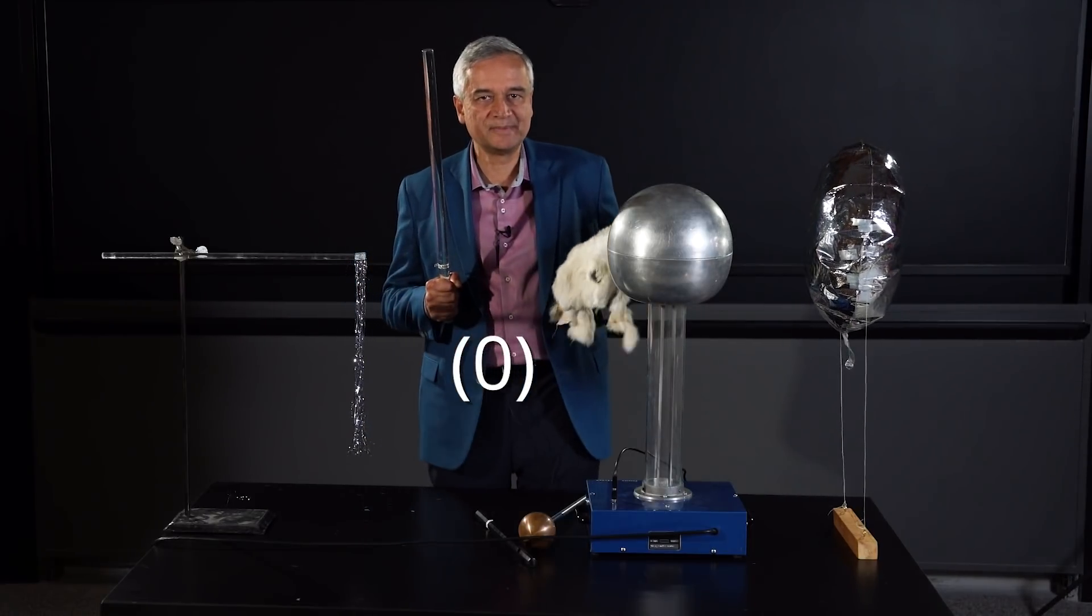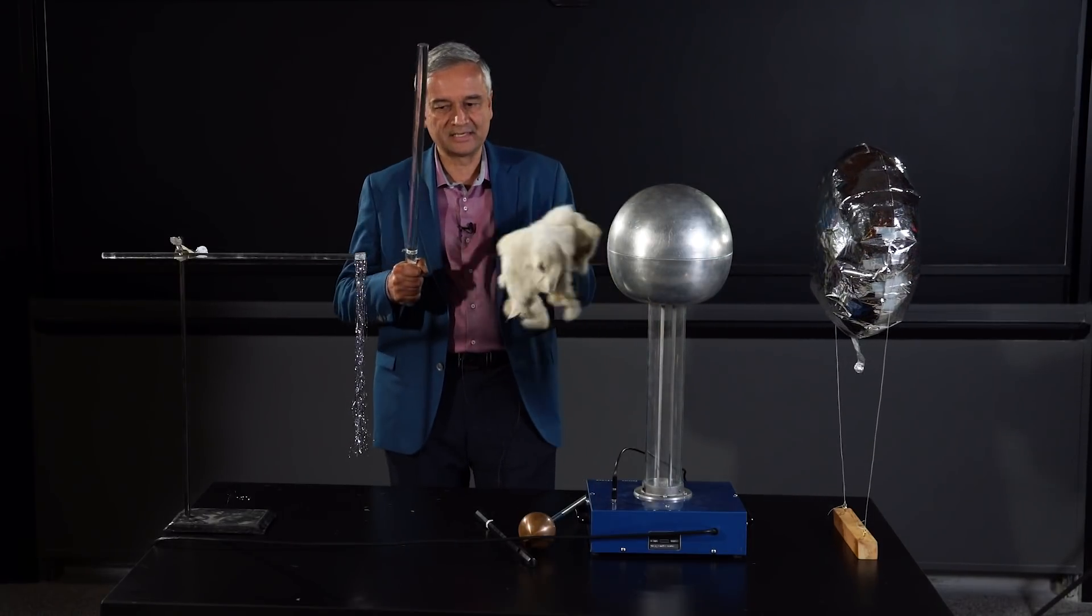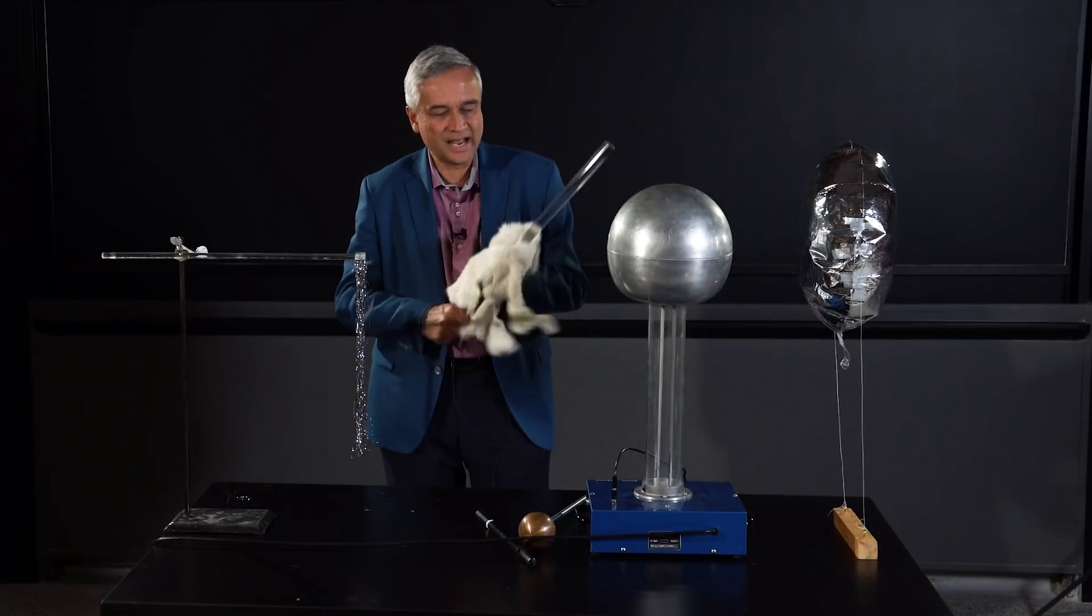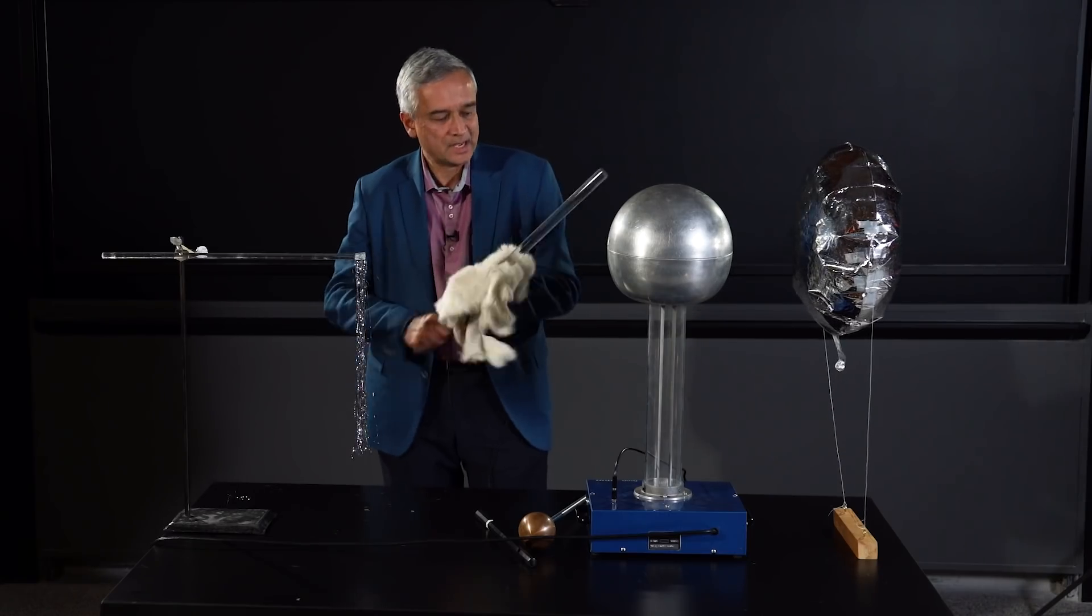So the conservation of charge means that I can move charge around, I can take some negative charge off the rod and get it onto the fur, but I can't create net charge out of nothing.